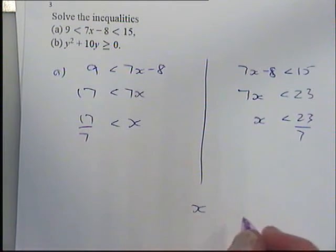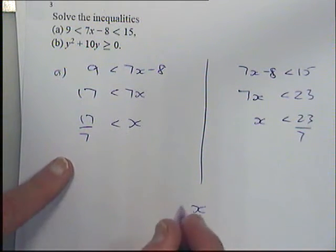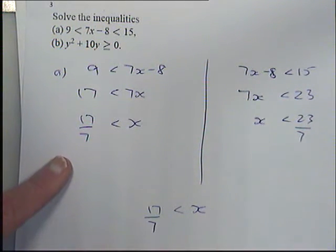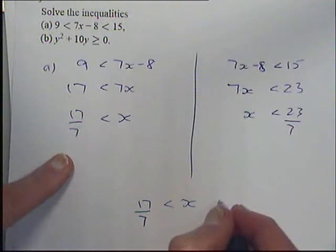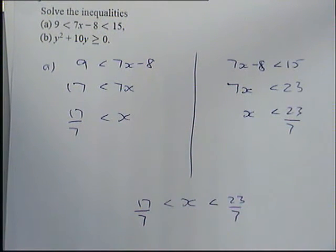And then just join them together. So you've got an x. And on the left of the x, you've got that written down. OK, so that's just how you deal with those double-headed ones. Just do it for two bits and then join them together again.